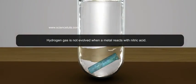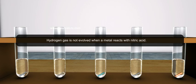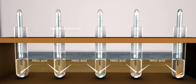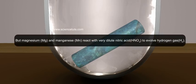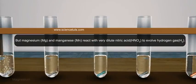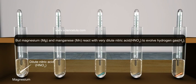Hydrogen gas is not evolved when a metal reacts with nitric acid because it is a strong oxidizing agent. But magnesium and manganese react with very dilute nitric acid to evolve hydrogen gas.